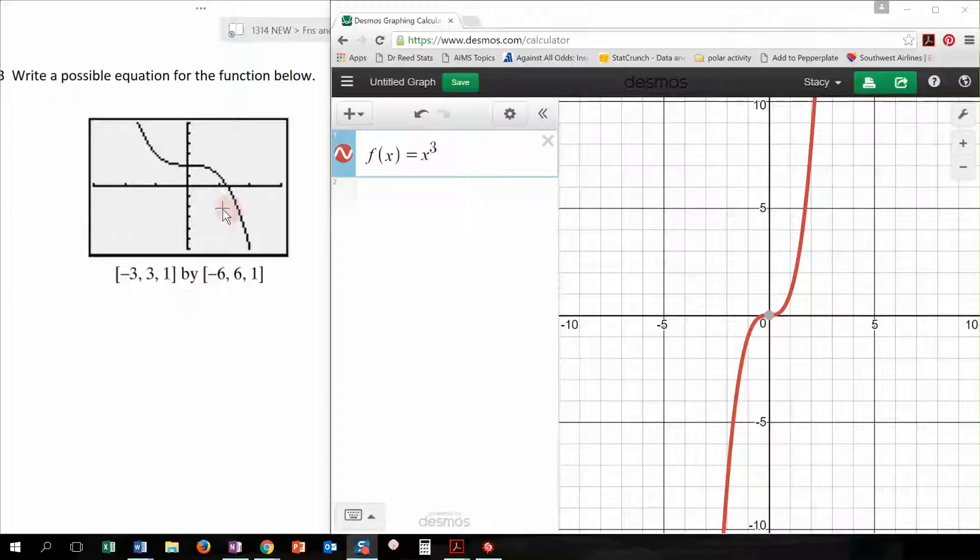And I think that this function right here looks like a cubic function. The reason I think that is because it's going off in opposite directions. It looks like the lines over here are in opposite sides of the quadrants, if you will.